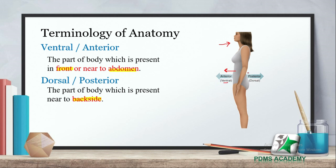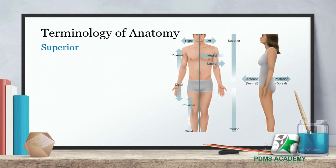Dorsal or posterior. The part of body which is present near to the backside is called posterior. Body کا کوئی ایسا part جو back side پہ ہو — ہر آرگنیزم کی دو sides ہوتی ہیں، ایک front side اور ایک back side۔ آرگن جو back side پہ پڑا ہوتا ہے اس کو ہم بولتے ہیں posterior یا dorsal۔